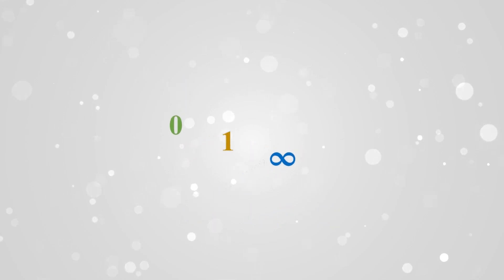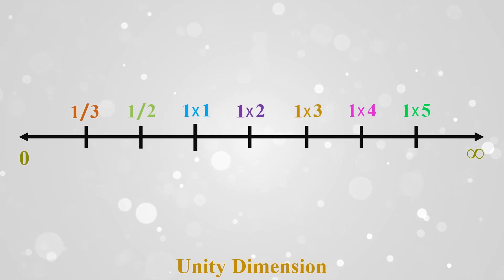0, 1, infinity are not just numbers they are even more than that involved in creating multi-dimensional number line. So 1 times 1, 1 times 2, 1 times 3 is a regular real number line that is named as unity dimension.